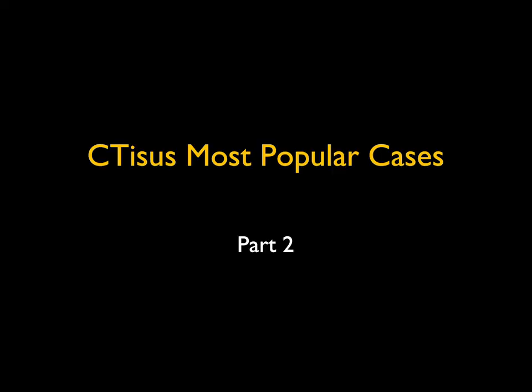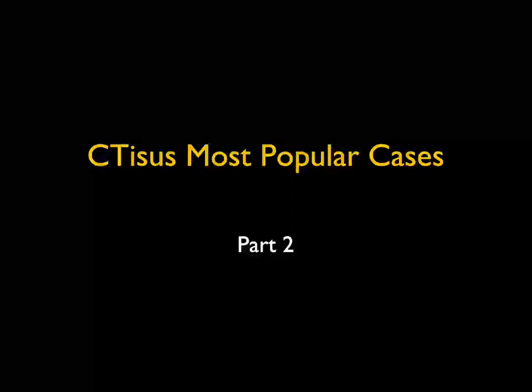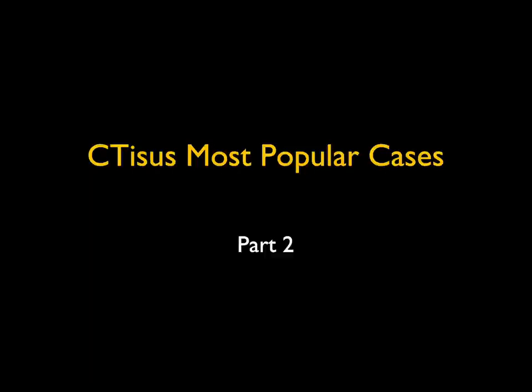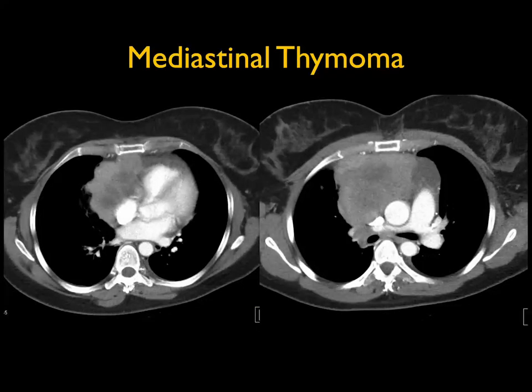On CTSS we post thousands and thousands of cases, but some cases seem to be the most popular. Let me take a look at ten of our most popular cases — we'll call this part two since we did part one previously. So let's get started. First case: anterior mediastinal mass, solid with some cystic component, somewhat eccentric.